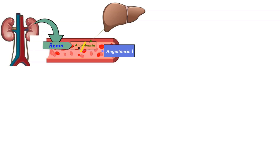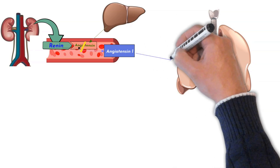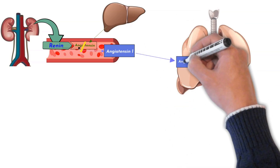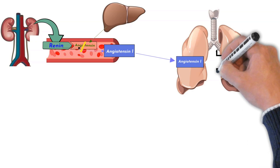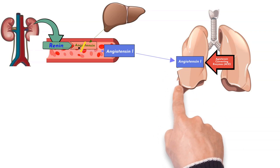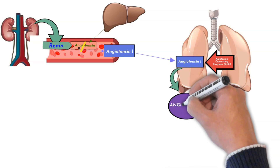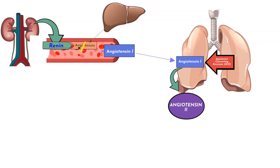Angiotensin-2 is the key compound in this system. When angiotensin-1 in the circulation reaches the lungs, it will be converted to angiotensin-2. This conversion is catalyzed by an enzyme called angiotensin-converting enzyme, or ACE. ACE is found predominantly in the vascular endothelium of the lungs, although ACE is also generated in smaller quantities within the kidneys in the renal endothelium.